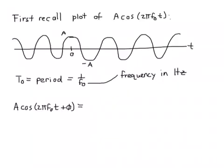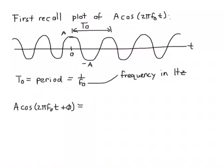First we should recall what a plot of A cos(2πf₀t) looks like — the signal without the phase shift. This is a standard cosine wave with amplitude A, meaning its maximum height is A and its minimum height is −A, and it has a period of t₀. That means it takes t₀ seconds to go through one cycle, and t₀ is the inverse of the frequency in hertz, so t₀ = 1/f₀. It starts off at its peak, goes through a cycle in t₀ seconds, and then continues onward.